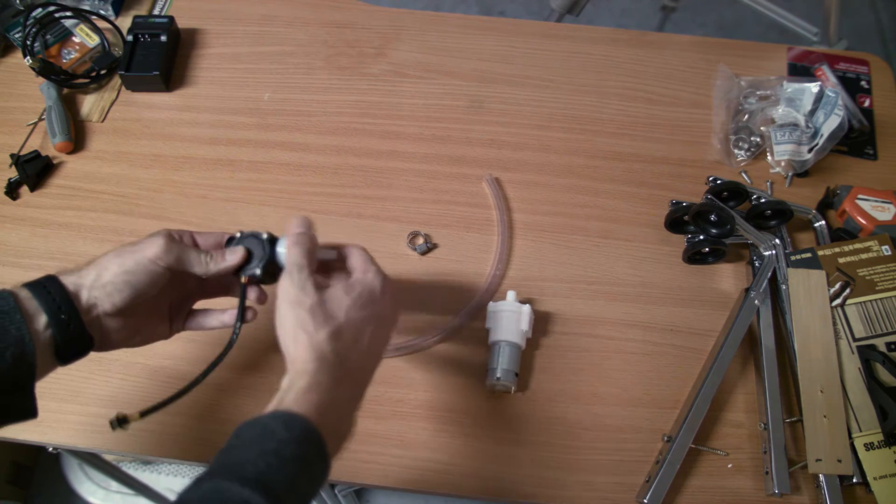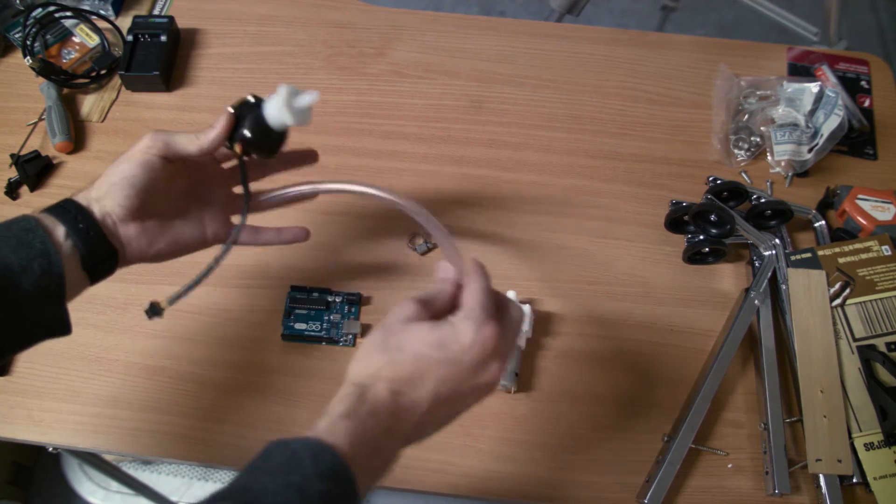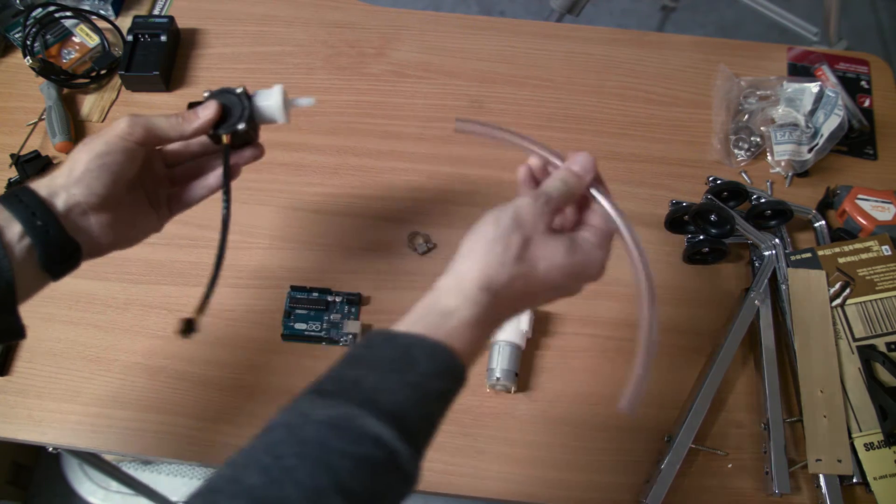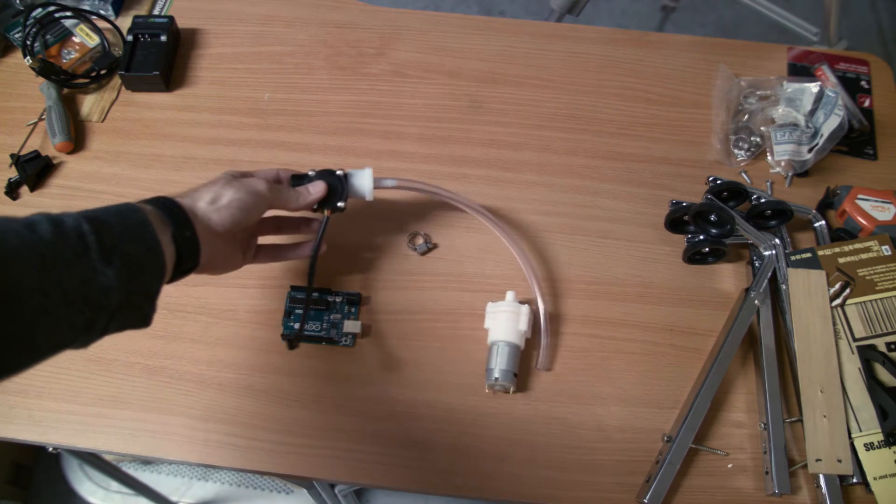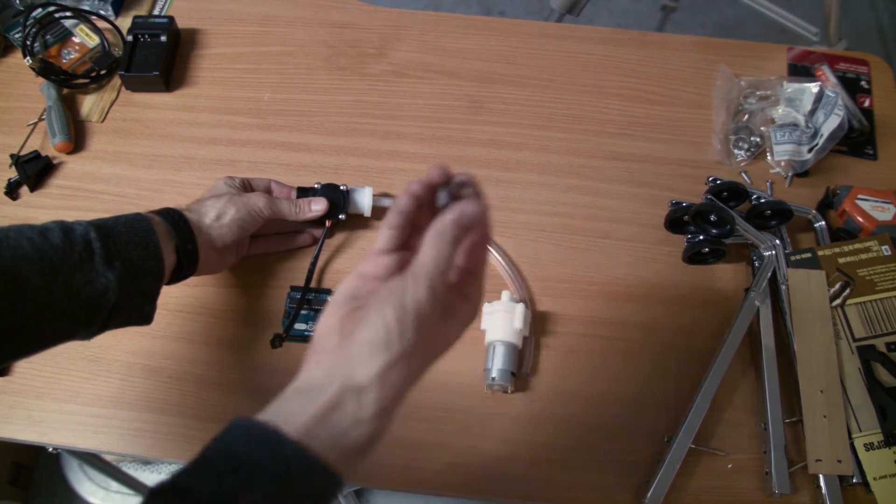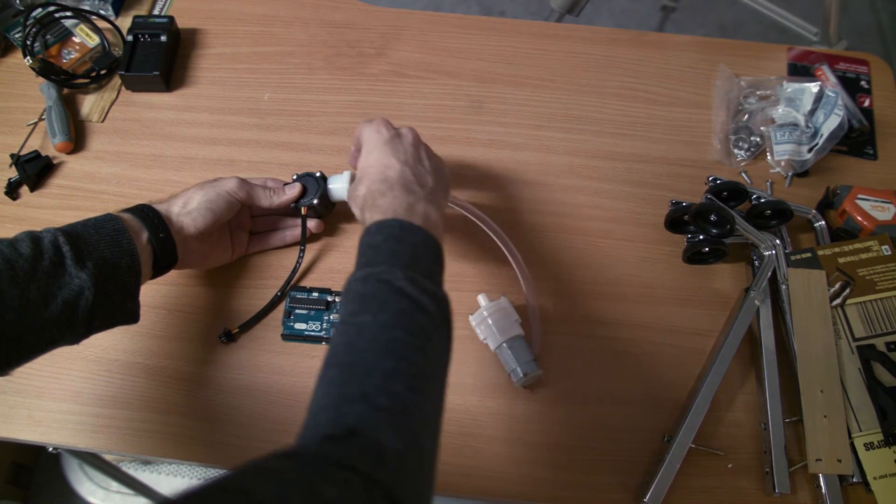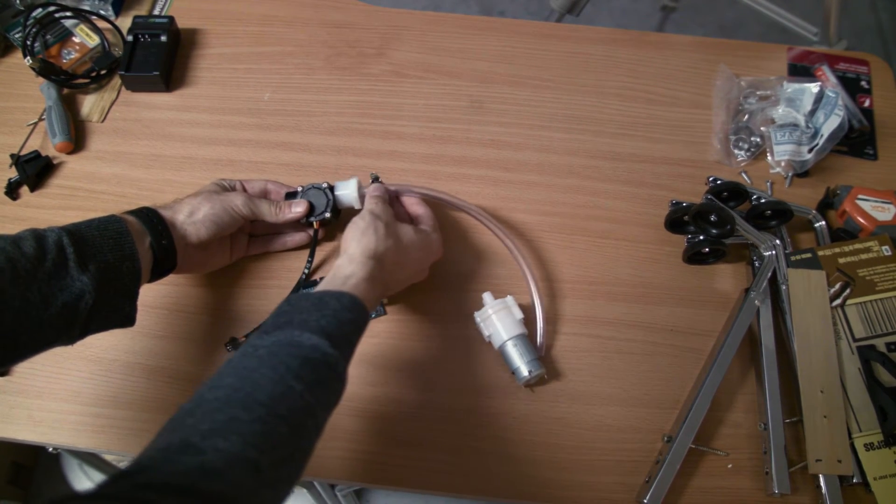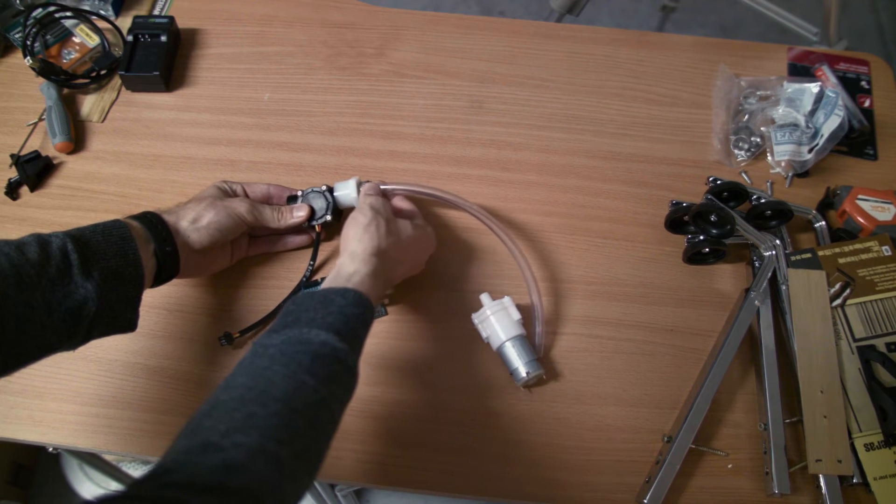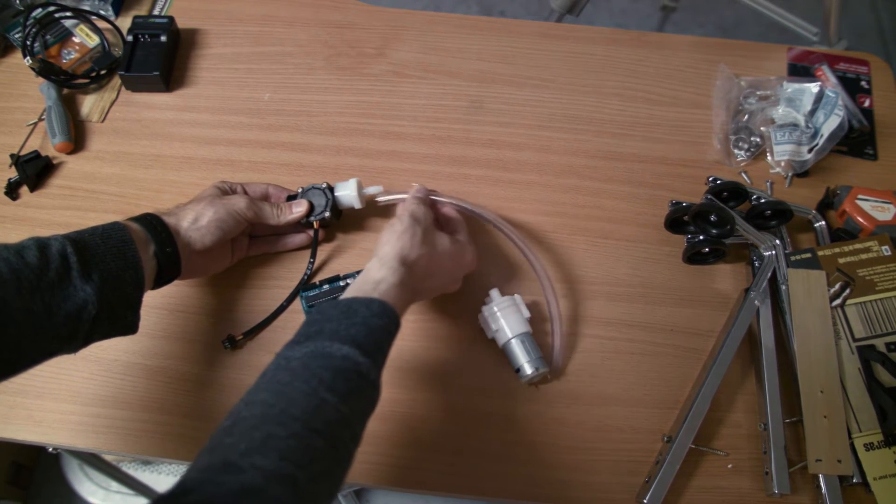I couldn't find one that was the exact match for this pipe, so it's a little loose. It comes right off pretty easily. But what I do have is this hose adapter clamp. You can put this on and tighten it up so that no extra fluid can leak through the gaps.